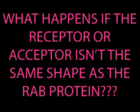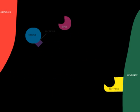What happens if the receptor or acceptor isn't the same shape as the RAB protein? Here, we have a RAB with a different binding site. As you can see, this binding site will not fit with the receptor. This means the protein will not bind and will continue looking for vesicles that it can bind to.